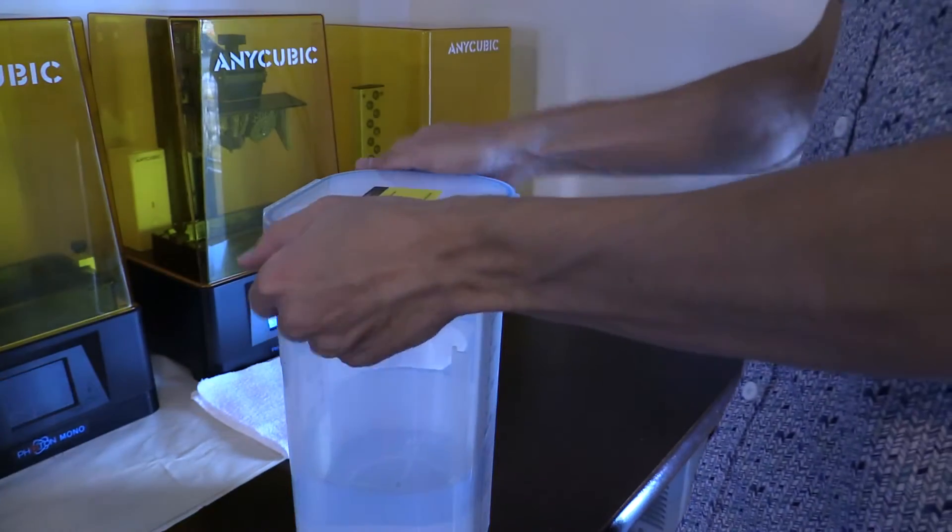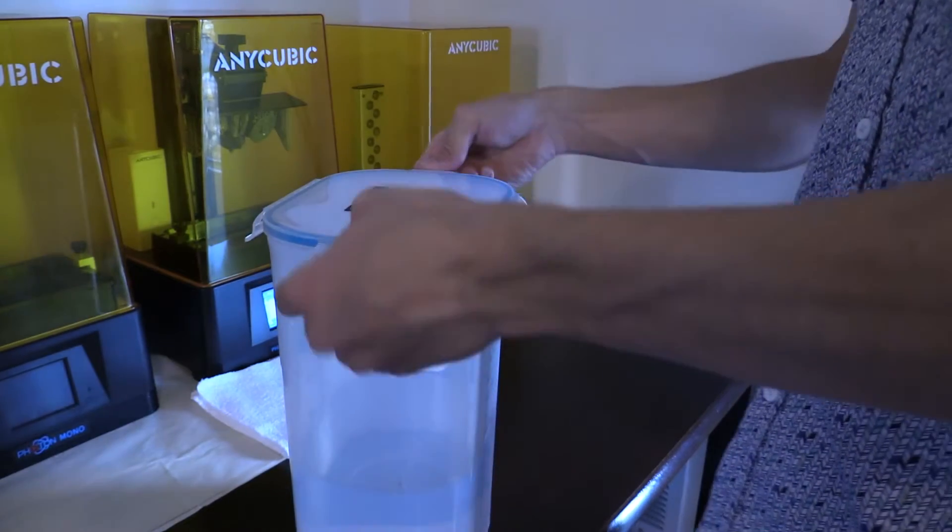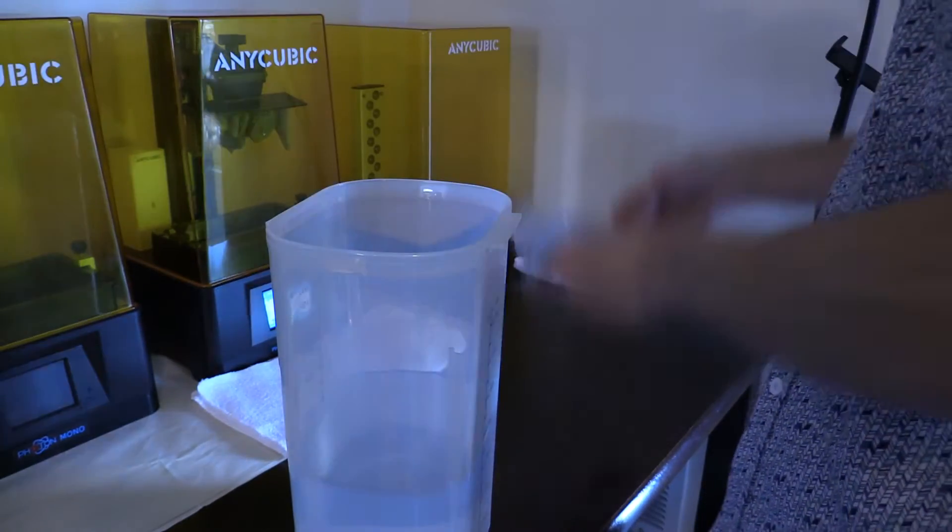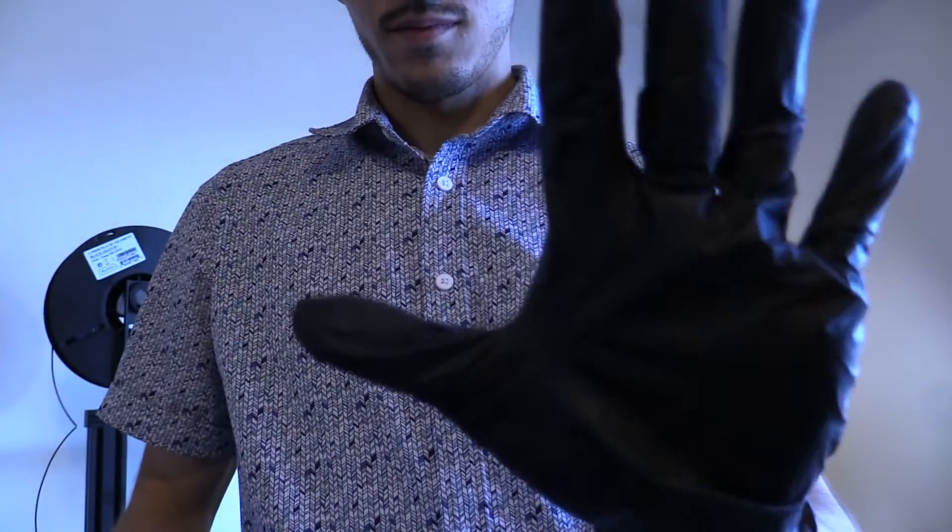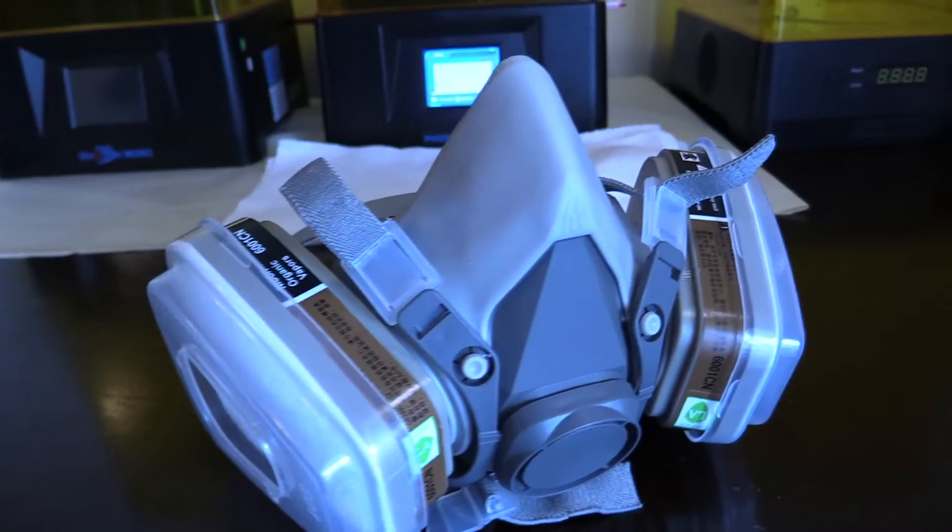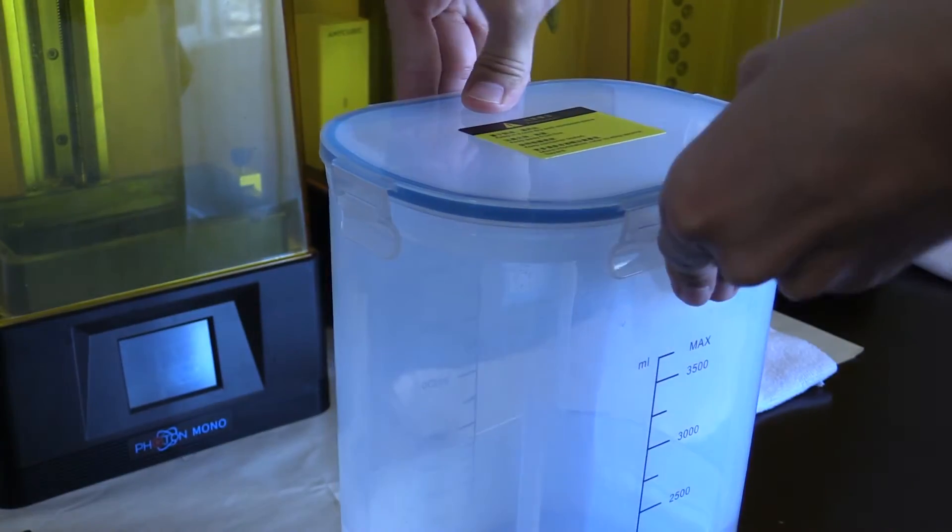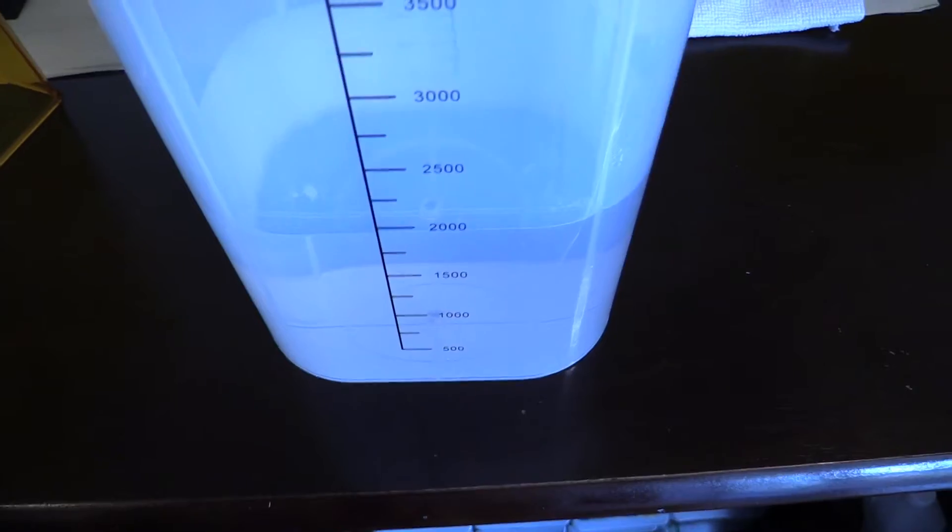IPA is great for cleaning, but it releases fumes just like the resin. Breathing them in or getting them in your eyes can lead to discomfort, dizziness, or headaches. So you should still take the same safety precautions we've talked about earlier to stay safe. Nitrile gloves, good ventilation, and keep it contained.